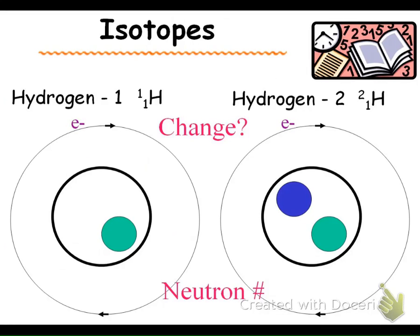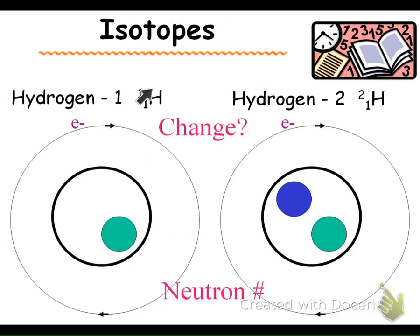Isotopes are when you have an atom with different mass numbers. Notice that our atomic number — the subscript — is never going to change, because if the atomic number changes, the atom changes. Here it's showing us hydrogen-2 and hydrogen-1: these are isotopes because the mass number is different. Your neutron number can vary within an atom — that's what we call an isotope.